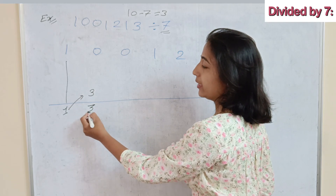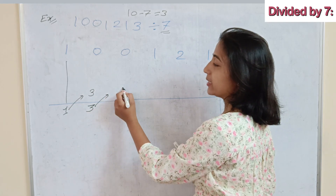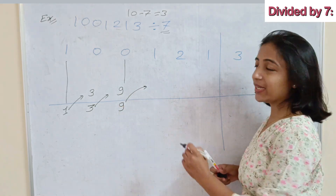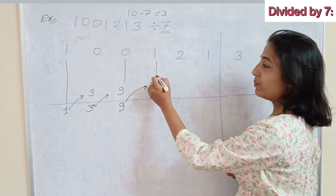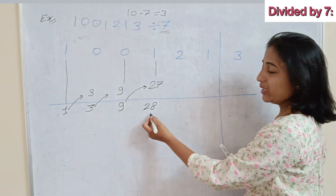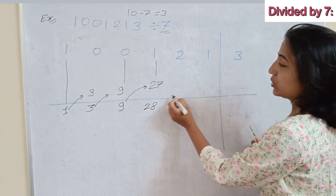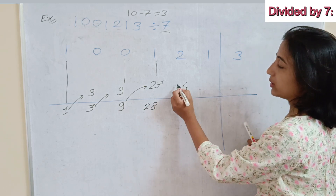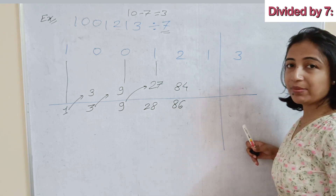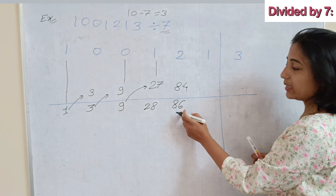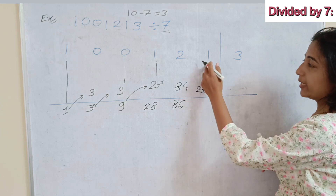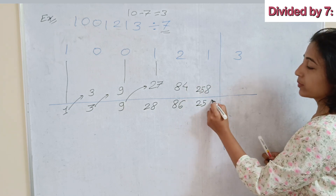3 times of 1 is 3, and 0 plus 3 is 3. Then 3 times 3 is 9, and 9 plus 0 is 9. Then 3 times 9 is 27, and 27 plus 1 is 28. Now 3 times 28 is 84, and 84 plus 2 is 86. Then 3 times 86 is 258, and 258 plus 1 is 259.